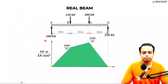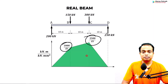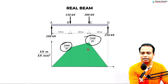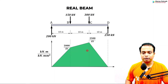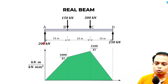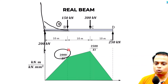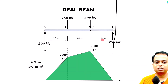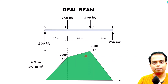This is the M/EI diagram — you take the bending moment diagram and divide all values by EI to get the M/EI diagram. Bending moment at B: the 200 N force produces sagging, so 200 × 10 = 2000. Bending moment at C: 250 × 10 = 2500. Dividing by EI gives the M/EI diagram with those two key points.